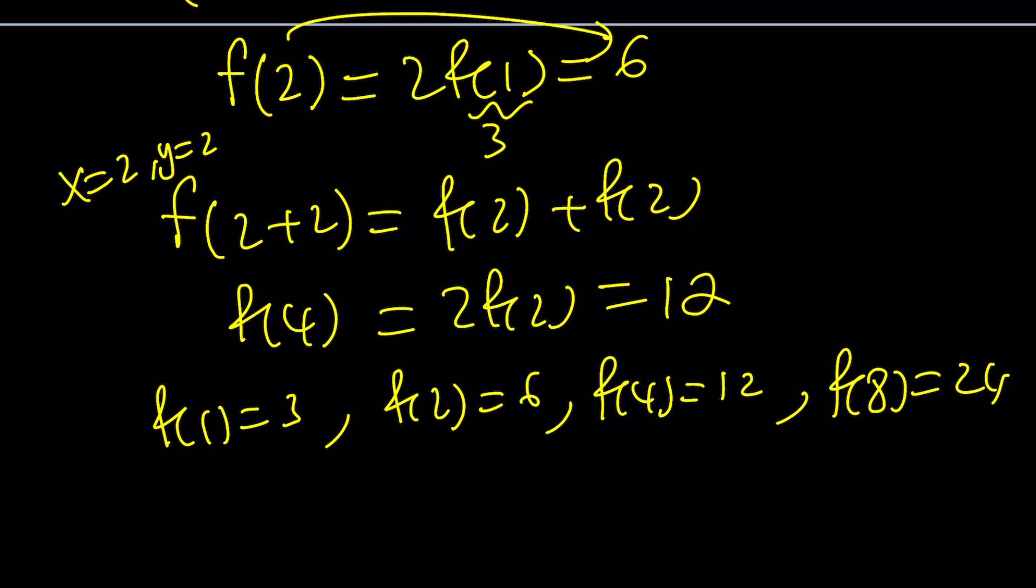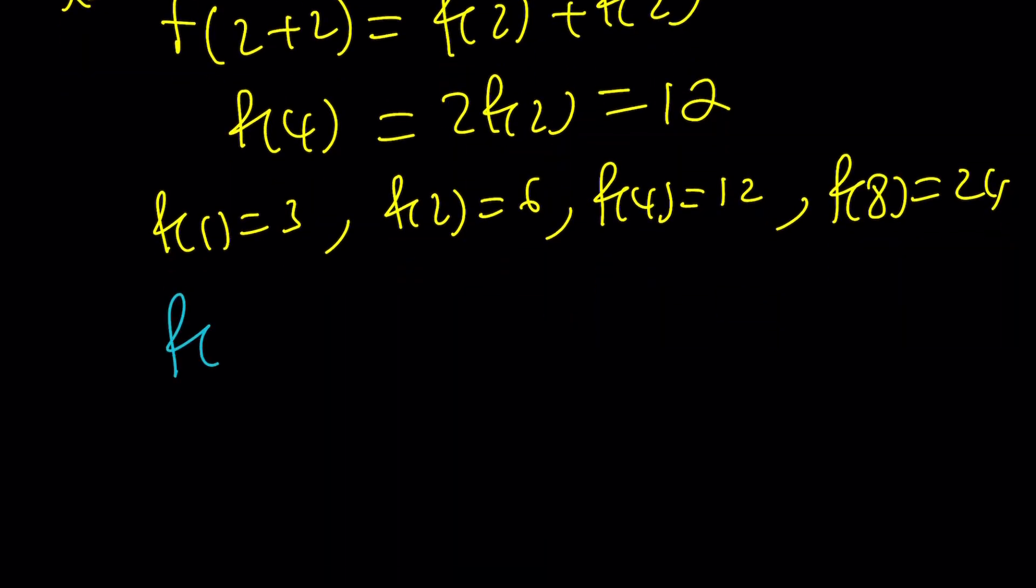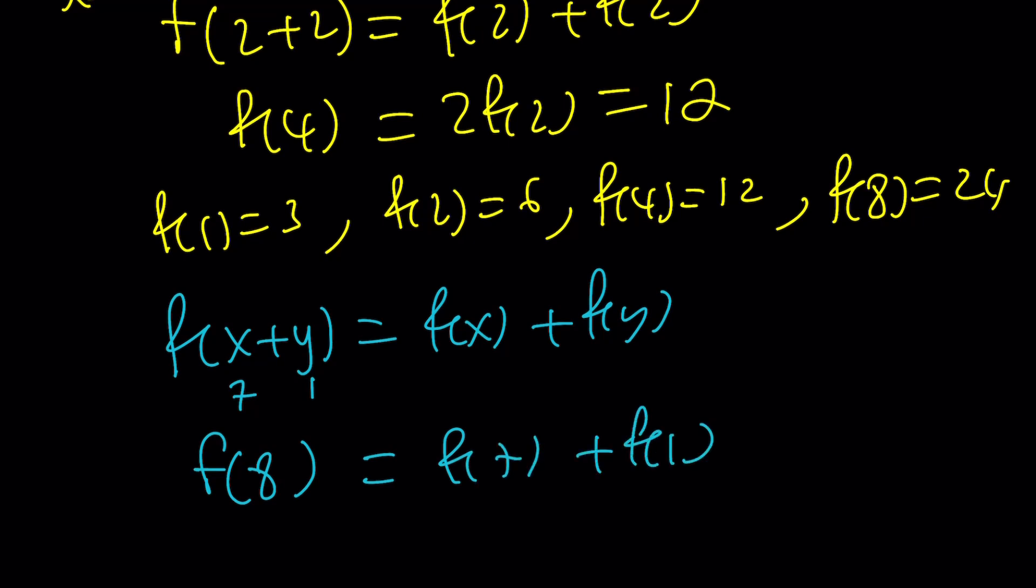But wait a minute. We just missed f of 7. Why? Because we got f of 8. How is that going to help us? Well, there's a couple ways to go about it. Let me show you both. First of all, if you have f of 8, you can find f of 7. You can go through 1 plus 7. Since f of x plus y is equal to f of x plus f of y, you can replace x with 7 and y with 1.